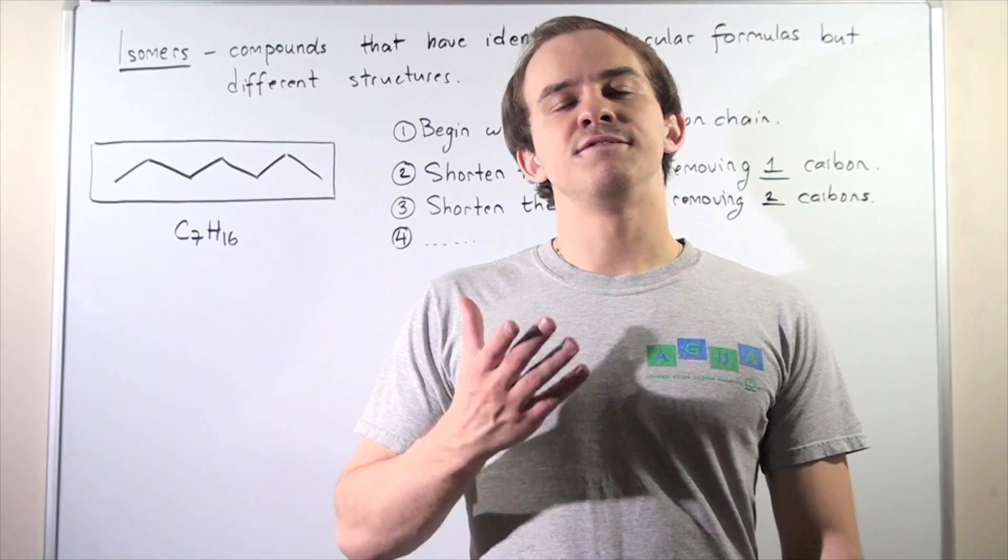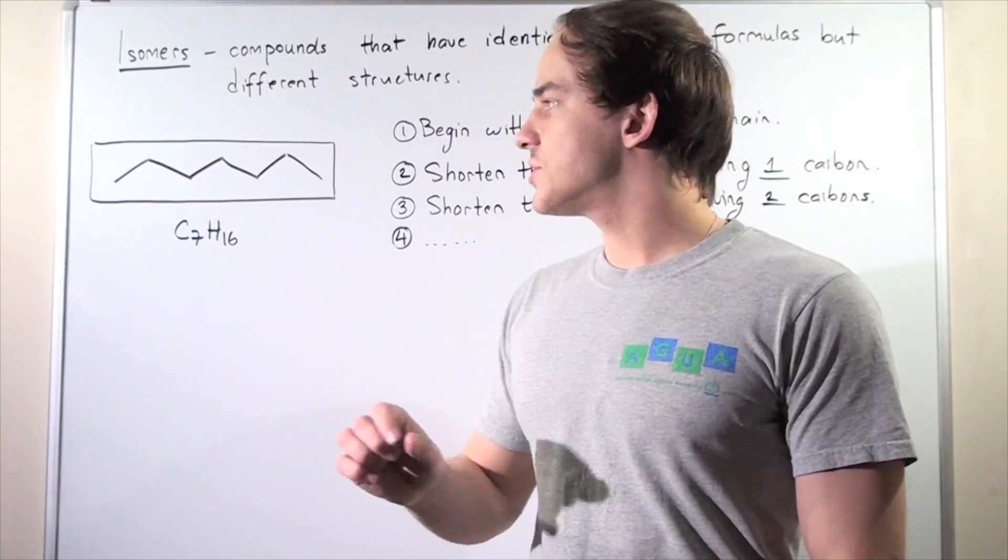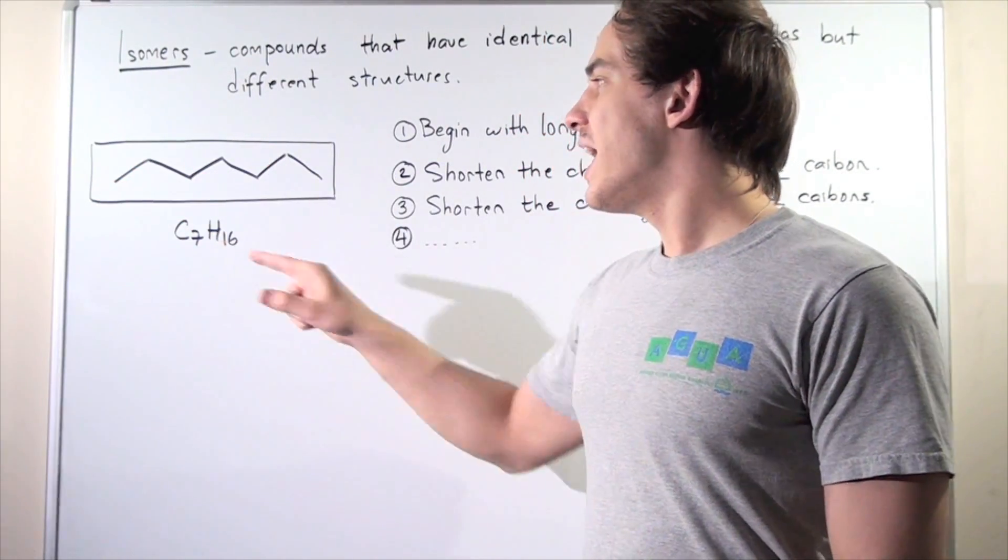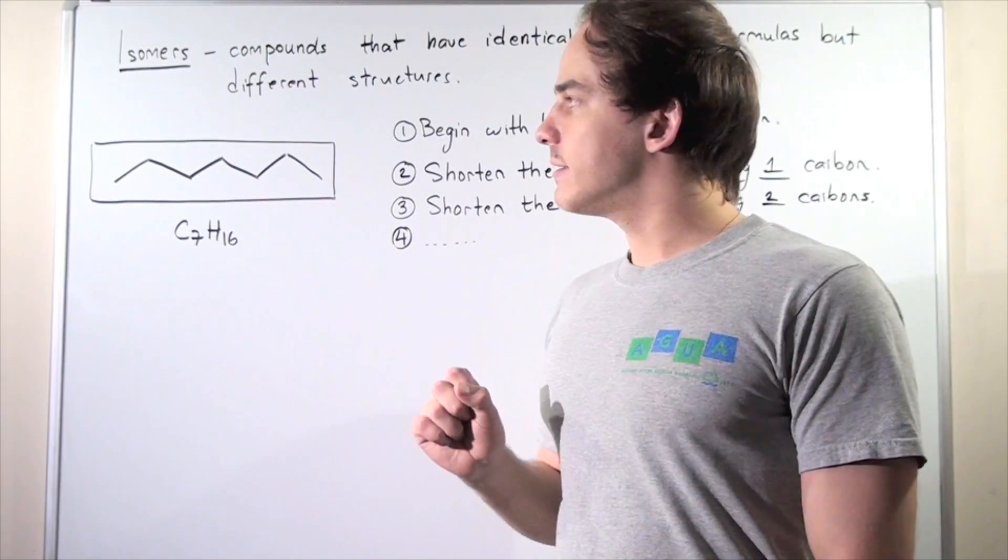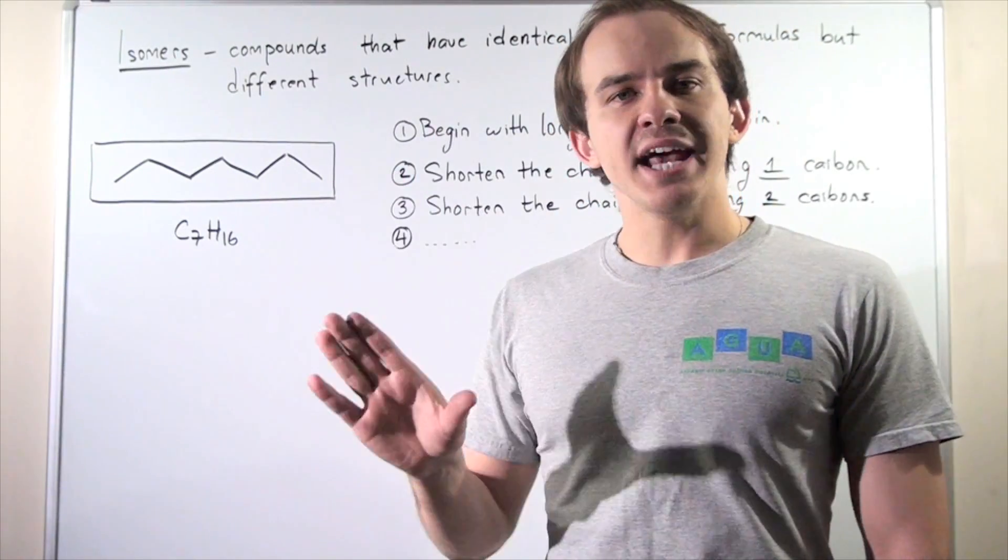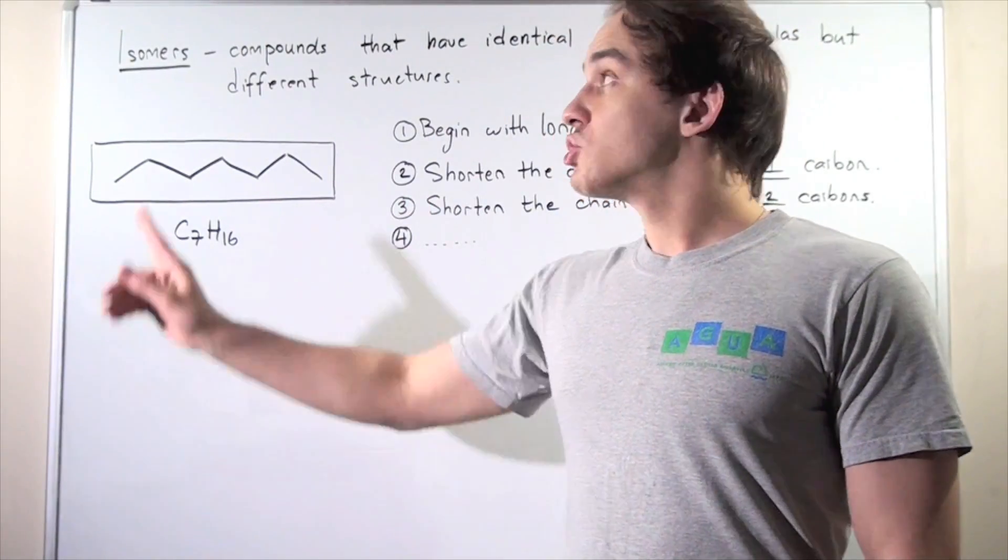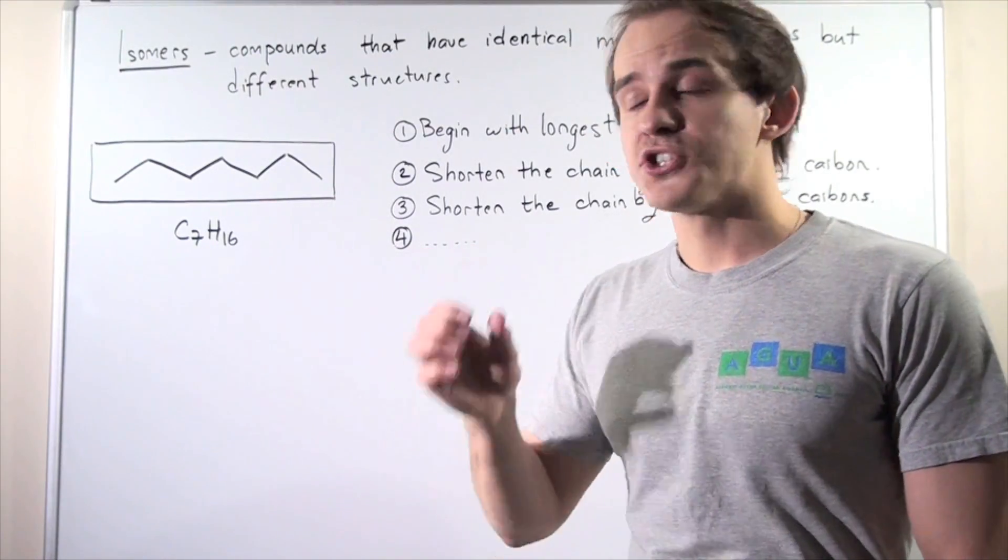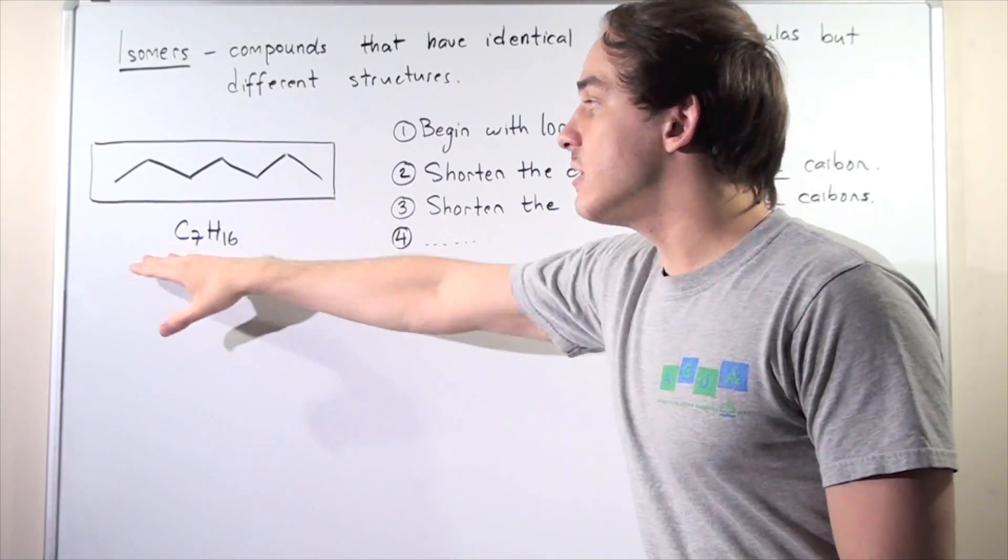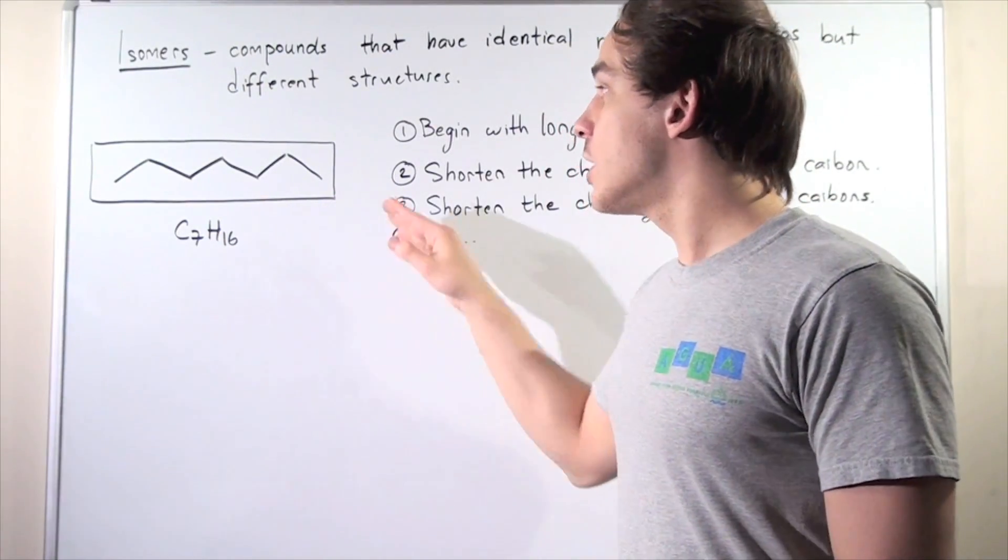So in this lecture, I'd like to find all the possible isomers of the heptane molecule, a 7-carbon alkane. So let's begin by defining what an isomer is. Isomers are compounds that have the same molecular formula but different structures.